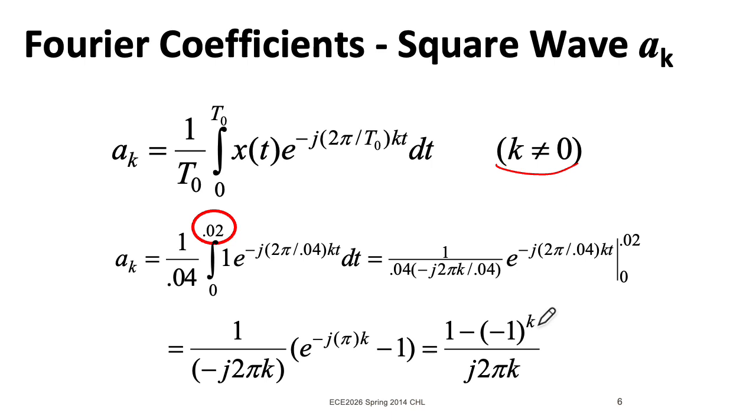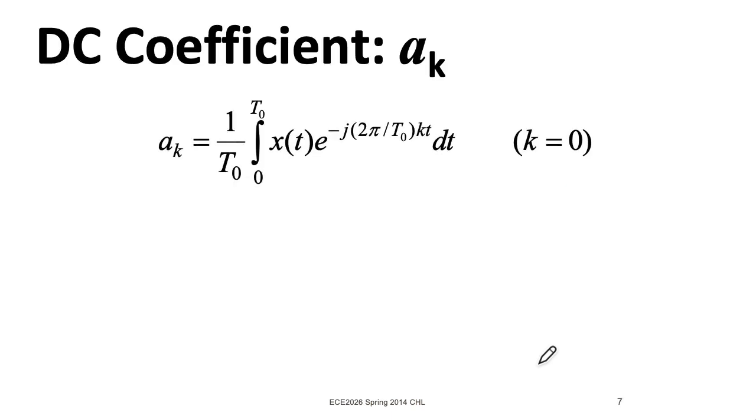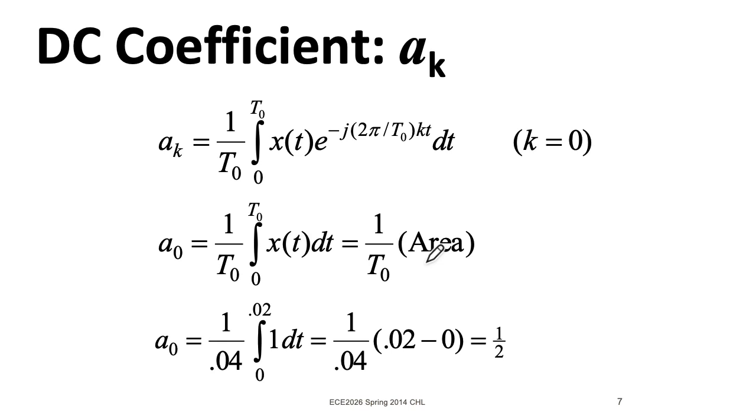If we think about what happens at k equals 0, I have 0 over 0, which is an indeterminate form. It's easiest to treat this separately using this special case for the DC coefficient. If we plug in k equals 0, we see it's the integral of the function over 1 period divided by t0. And remember, an integral is just an area. So if we think about this, we can actually work through the calculus, or we can just look at the function itself and easily figure out that this has an area of 0.02. So when we divide that 0.02 by 0.04, we get a half.